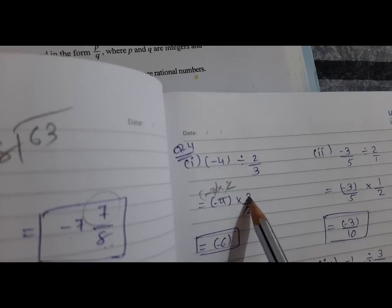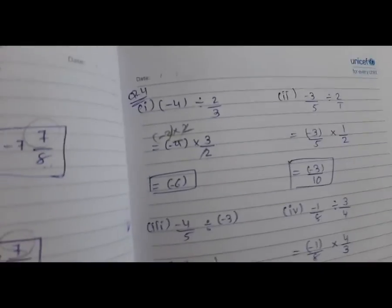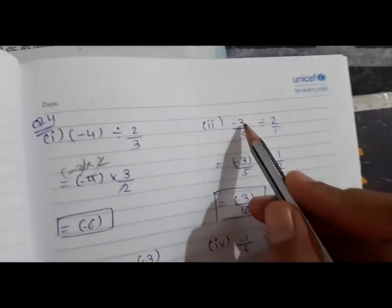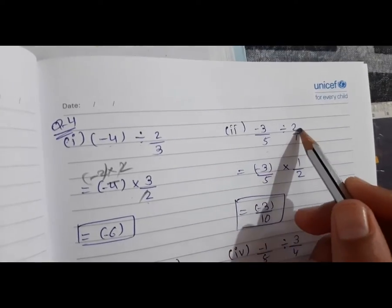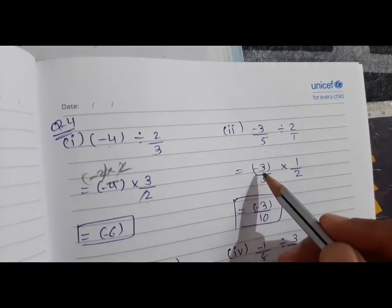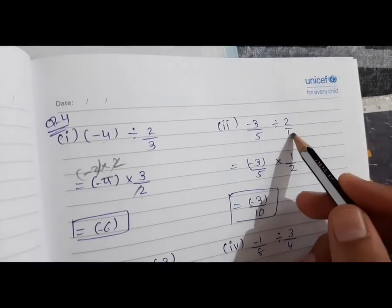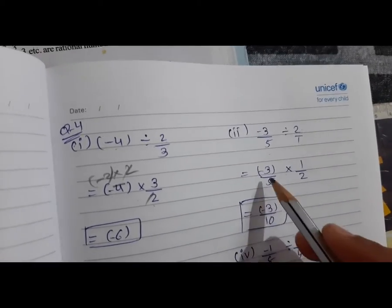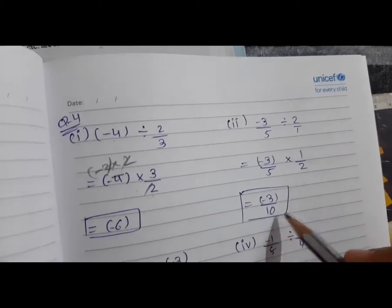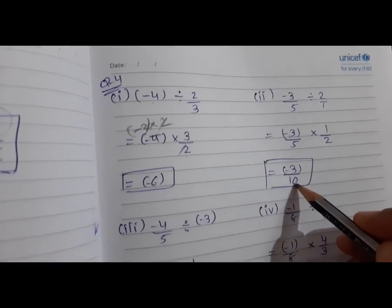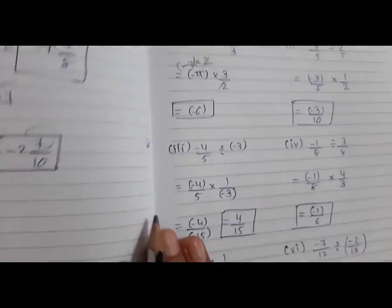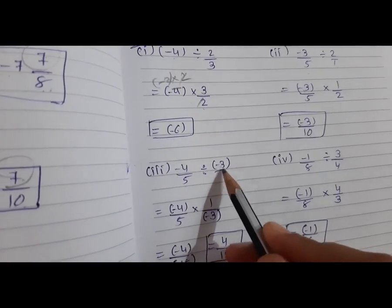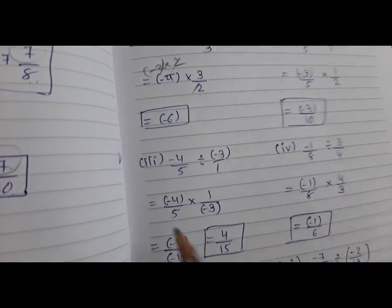Now here, 2 times 2 is 4, so we cut 2 and 2. This gives minus 2. Minus 2 multiplied by 3 is minus 6. After that, minus 3 upon 5 divide by 2 upon 1. So minus 3 upon 5 multiply 1 upon 2. So 3 times 1 is 3, 5 times 2 is 10 — answer is minus 3 upon 10.